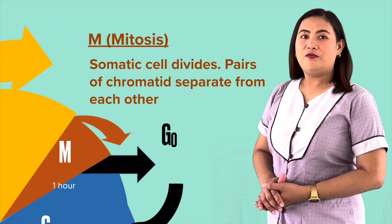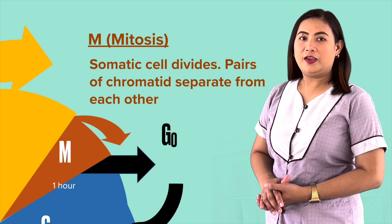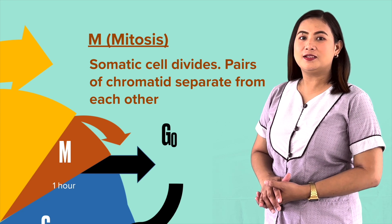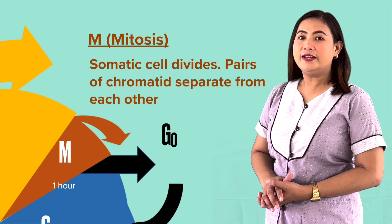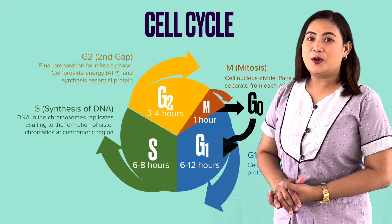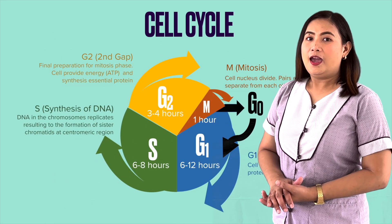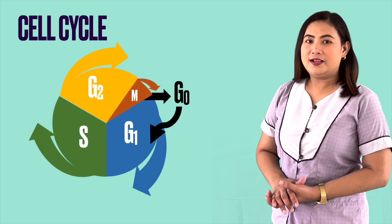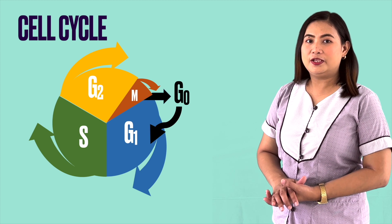It is followed by the last phase, which is the mitosis phase. While some cells are constantly dividing, others exit G1 and enter a resting state called G0, where a cell is performing its function without actively preparing to divide.